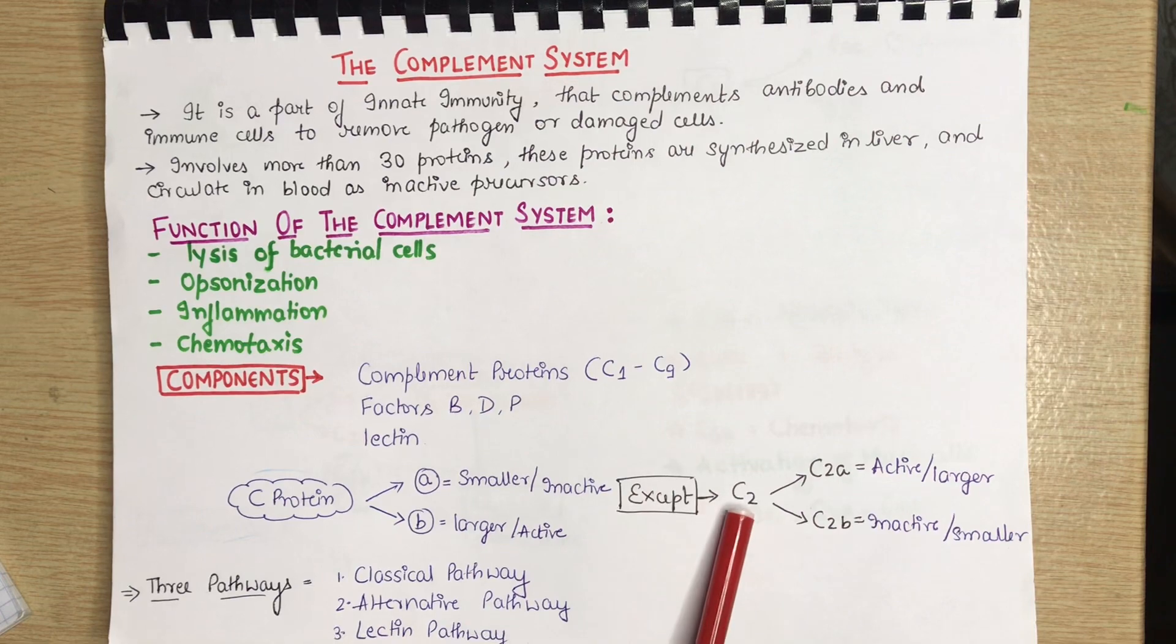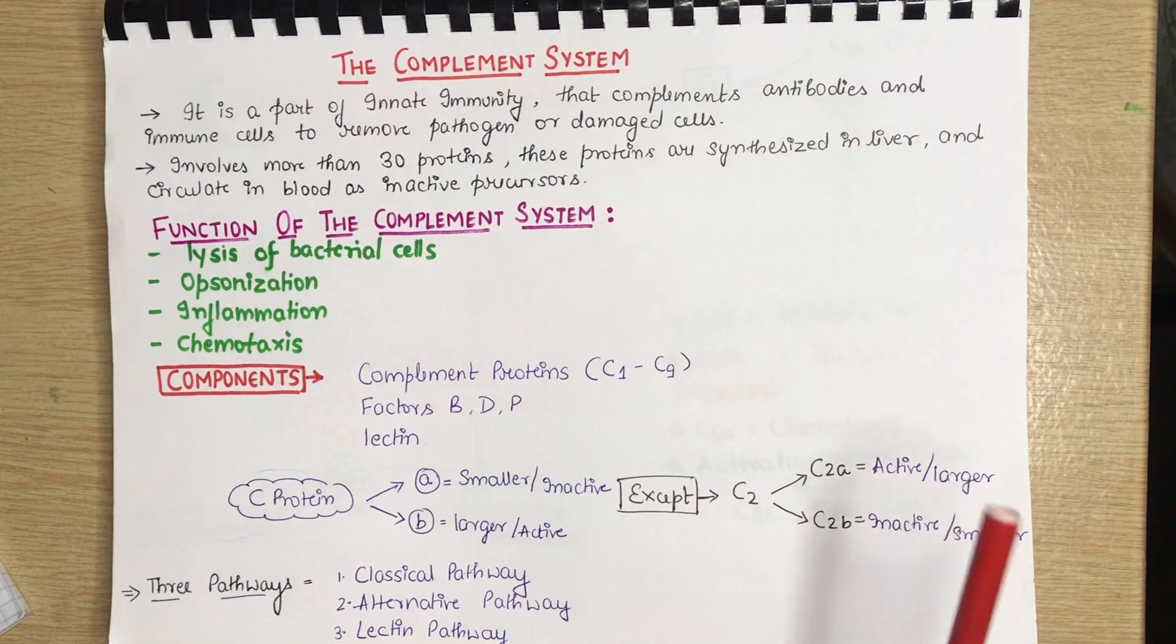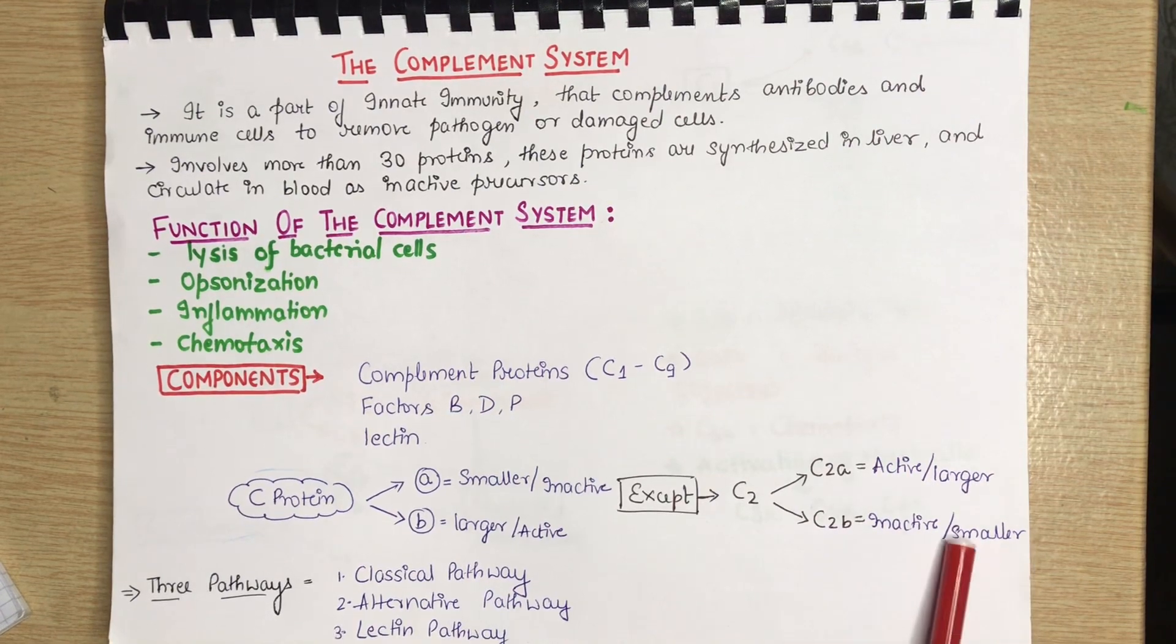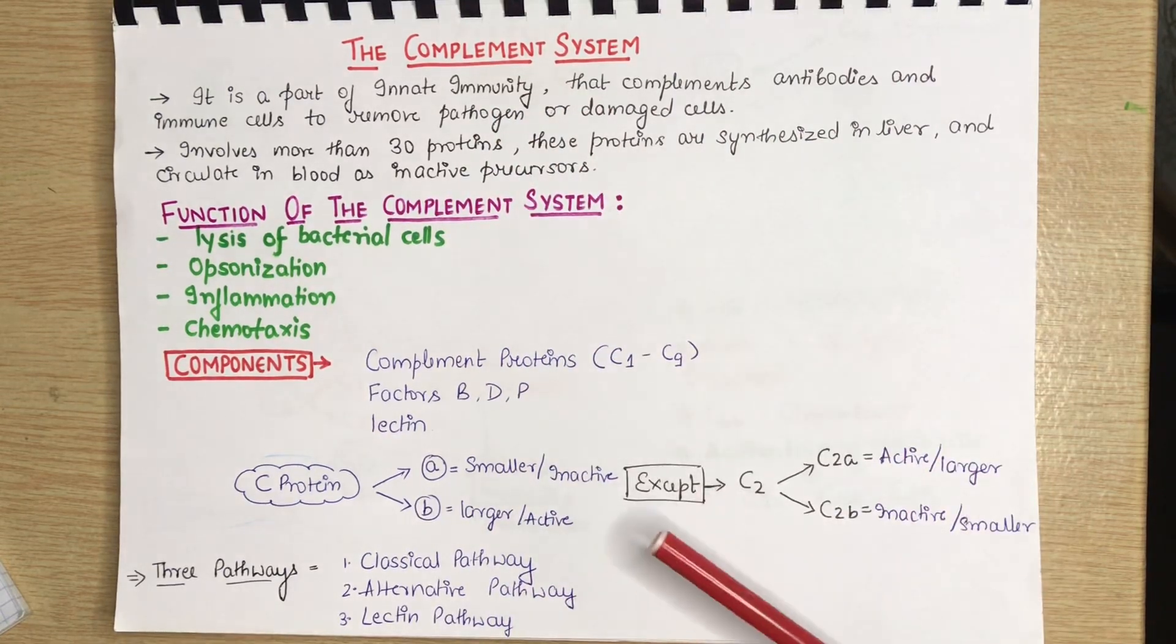Except for the C2 complement protein. When it cleaves, the C2A is larger and active and C2B is inactive and smaller. So, the complement system has three pathways.